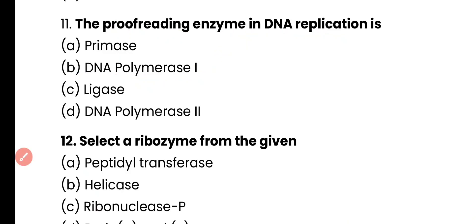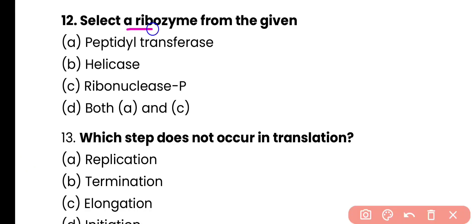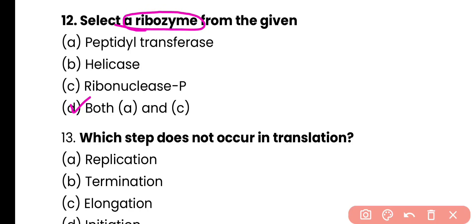Question number 12. Select a ribozyme from the given options: peptidyl transferase, helicase, ribonuclease P, or both A and C? Correct answer is option D. A ribozyme is an RNA which has catalytic activity. Both peptidyl transferase and ribonuclease P are ribozymes.